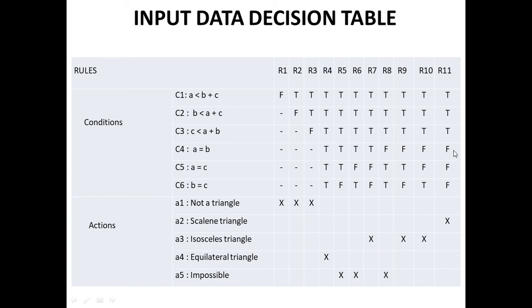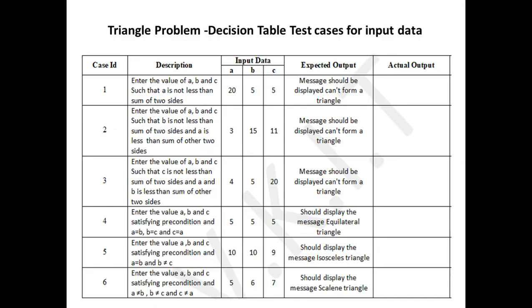For a simpler way to remember, if you get confused, you can go like this: 0 0 0, 0 0 1, 0 1 0, 0 1 1, 1 0 0, 1 1 0, 1 1 1 — and then tick the particular action accordingly. That is the decision table for the triangle problem.